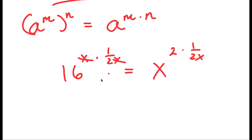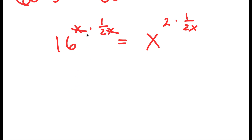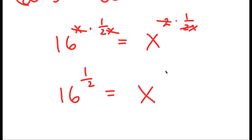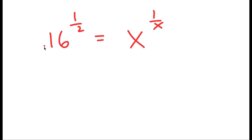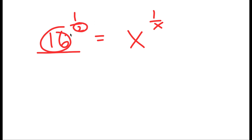Now, the x and x cancel out on my left-hand side because they multiply out, so I'm left with 16 to the power of 1 half on my left-hand side. And for my right-hand side, the 2s cancel out, so I'm left with x to the power of 1 over x. My goal is to turn the left side to be in the form some number to the power of 1 over that number, so we can make that number our solution. This means that 16 and 2 have to turn into the same number, so we need to rearrange this so that 16 and 2 are the same number.